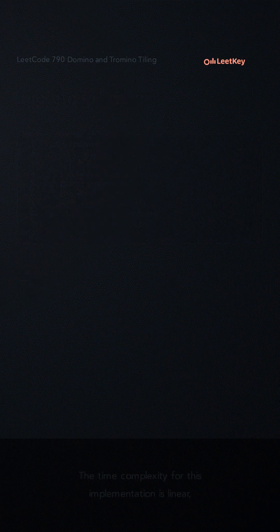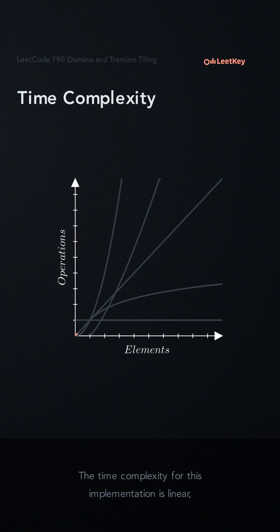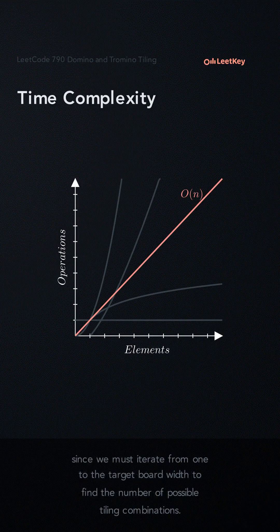The time complexity for this implementation is linear, since we must iterate from 1 to the target board size to find the number of possible tiling combinations.